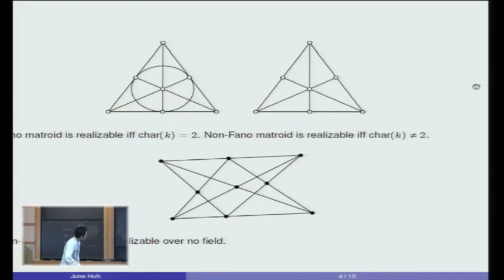Here are some examples where answers are well known. The first picture represents the projectivized picture of linear dependency relations among seven elements. The lines you see here, actually seven lines including the curved one, show you all non-trivial dependencies between three vectors or elements. That's the picture from the finite projective plane defined over a field with two elements, giving one matroid called Fano matroid. That matroid, as an abstract combinatorial structure, is realizable if and only if the field has characteristic two.